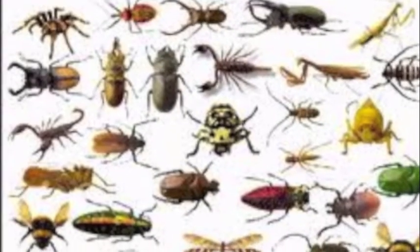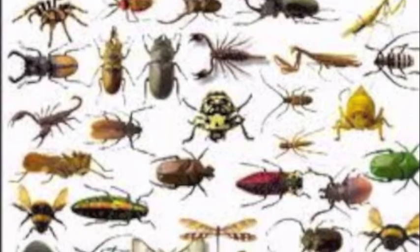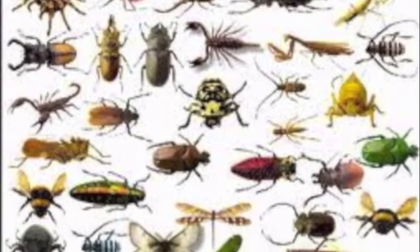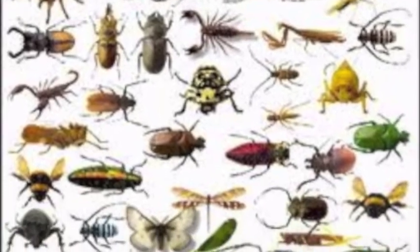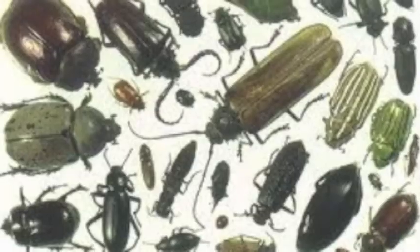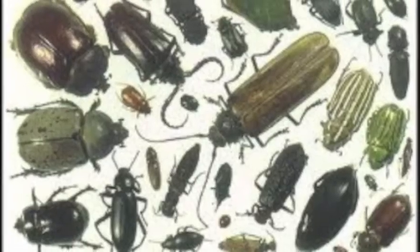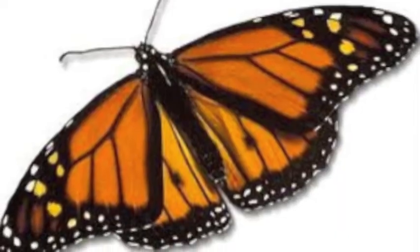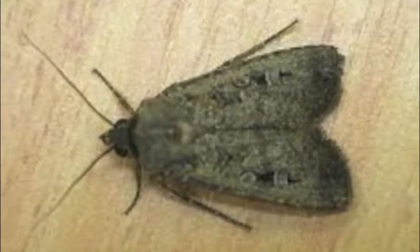There are three types of poxviruses that plague the insect world. These insect poxviruses are the beetle poxes, the butterfly poxes, which include moth poxes, and the poxes of flies.